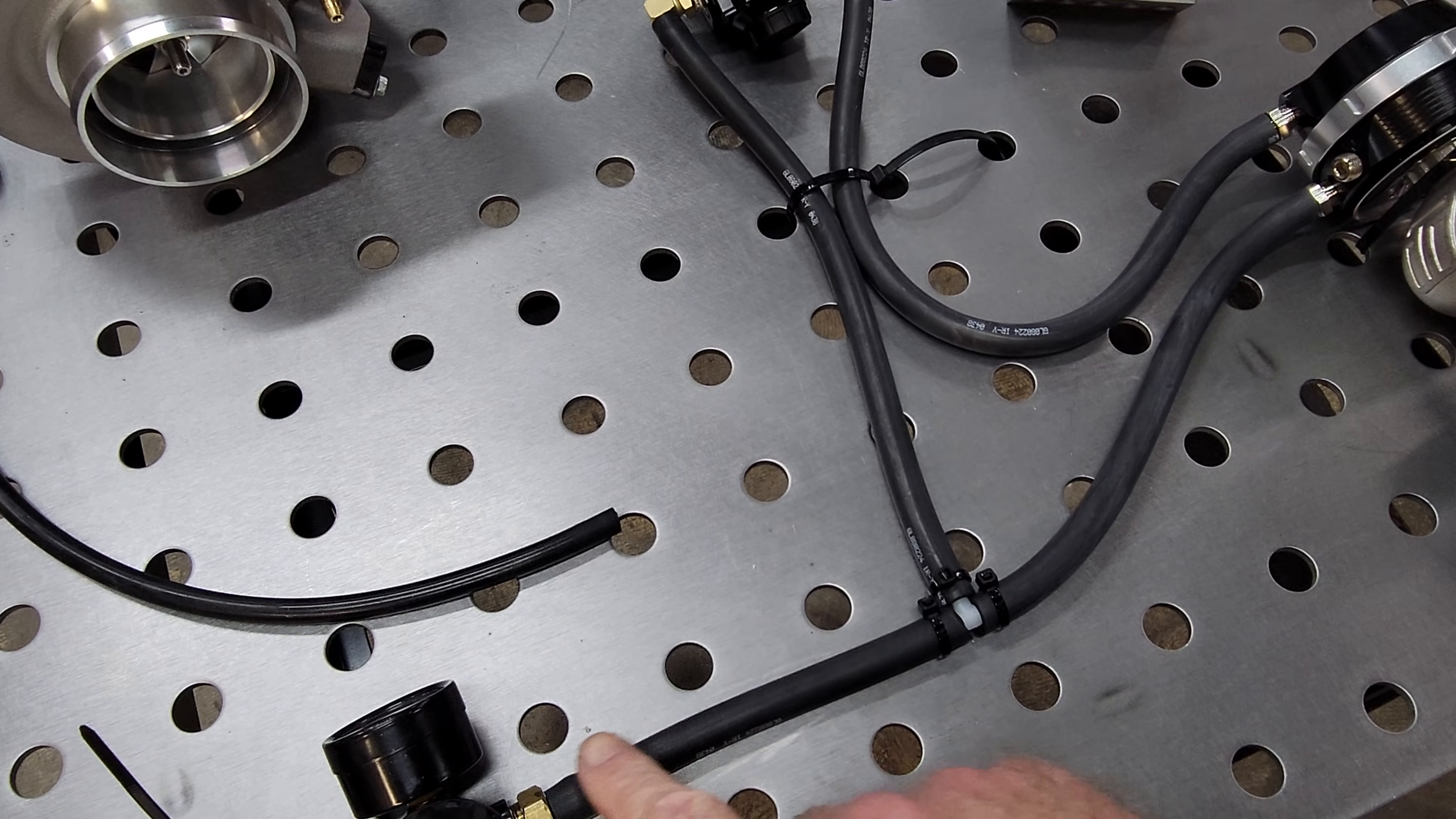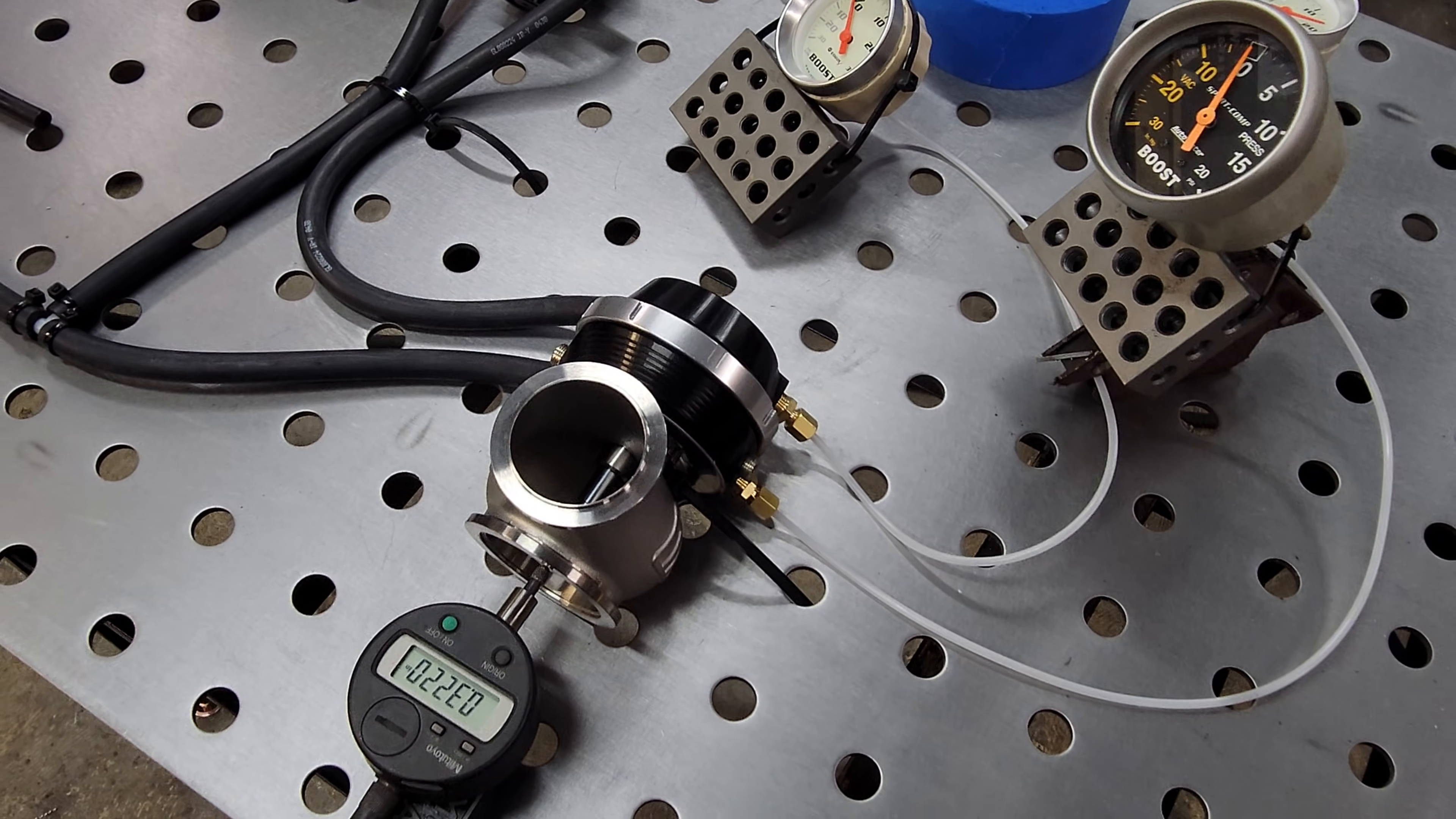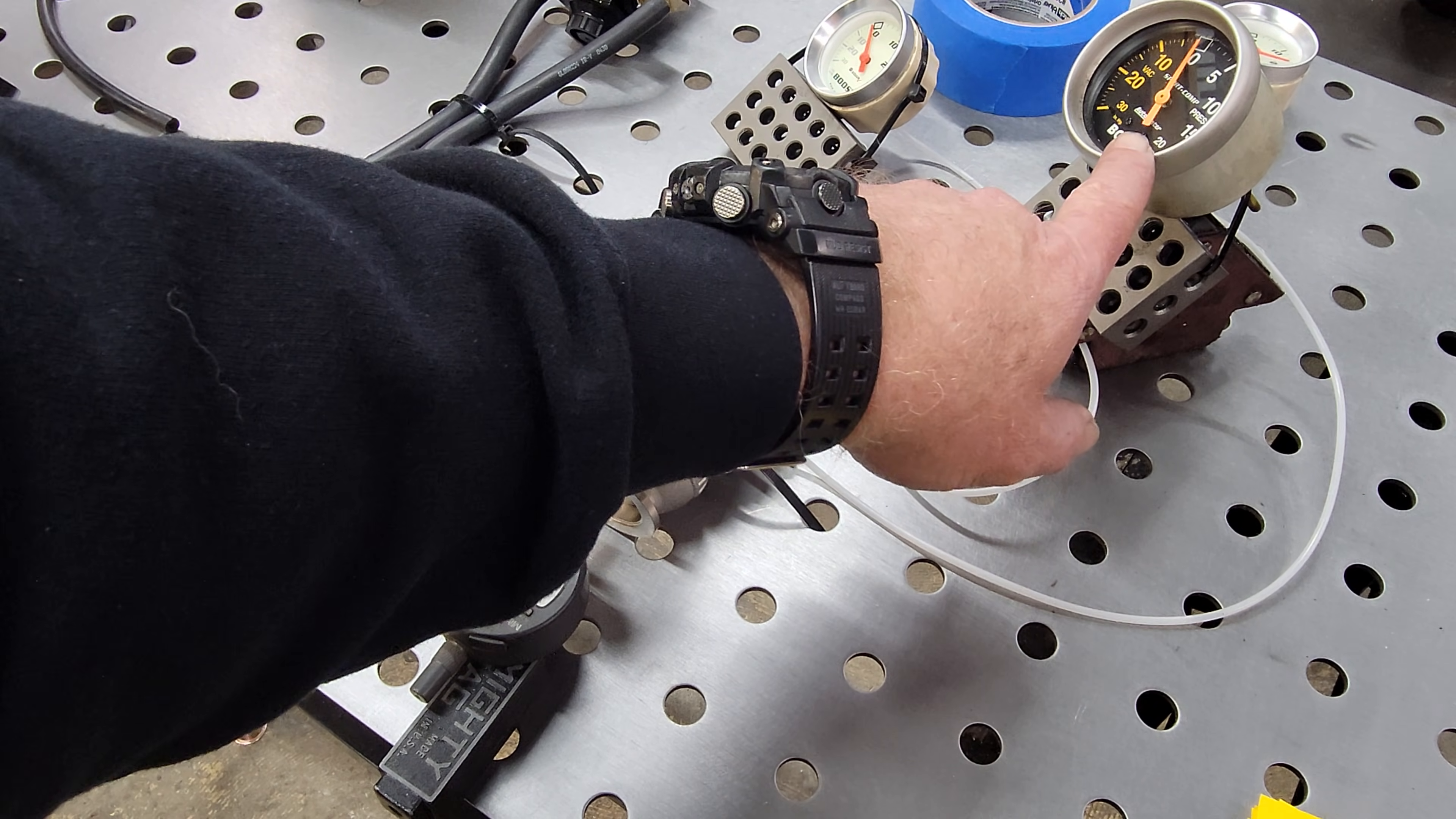Alright, so from your pressure source, you're going to go through a T-fitting and then to the bottom port of your wastegate. Pretty standard hookup, just like we did to get just a simplified boost control. This vacuum line, or pressure reference line, is also tied into the bottom port of the wastegate, and it is hooked to this larger boost gauge right here.